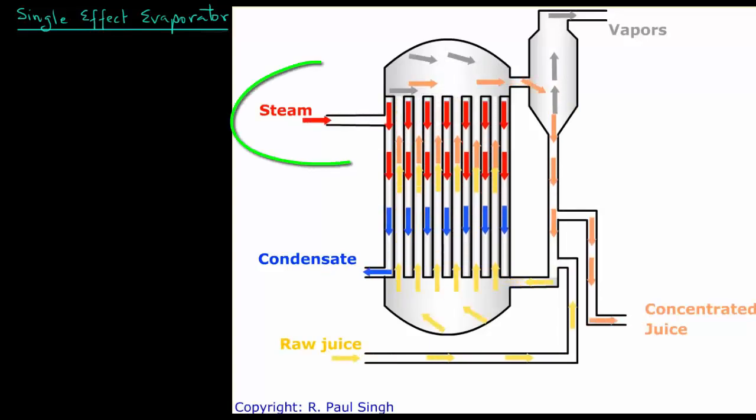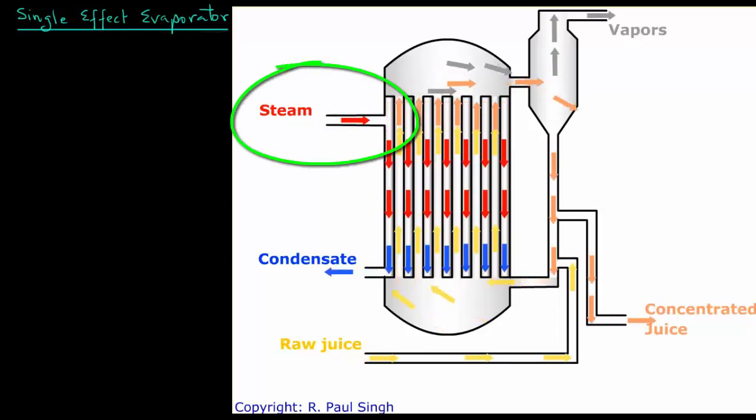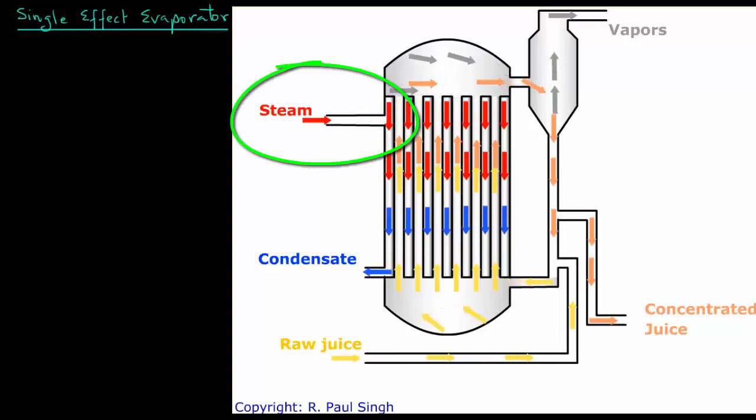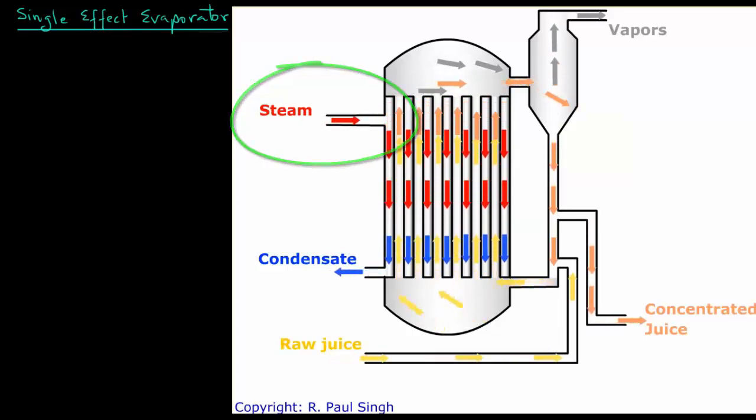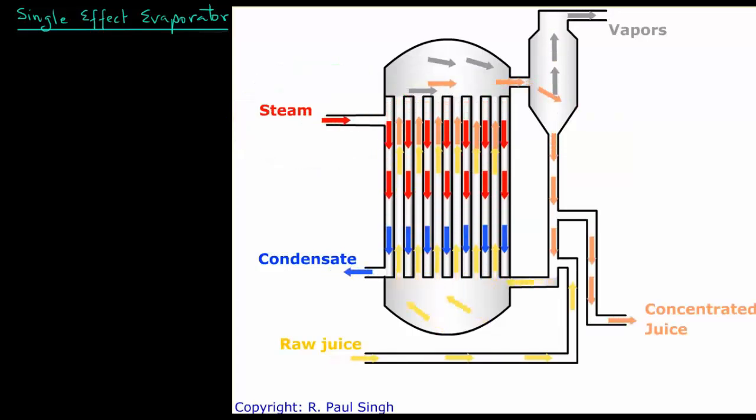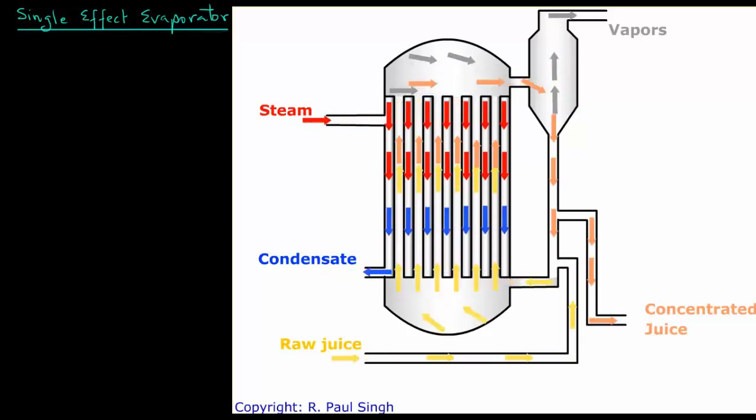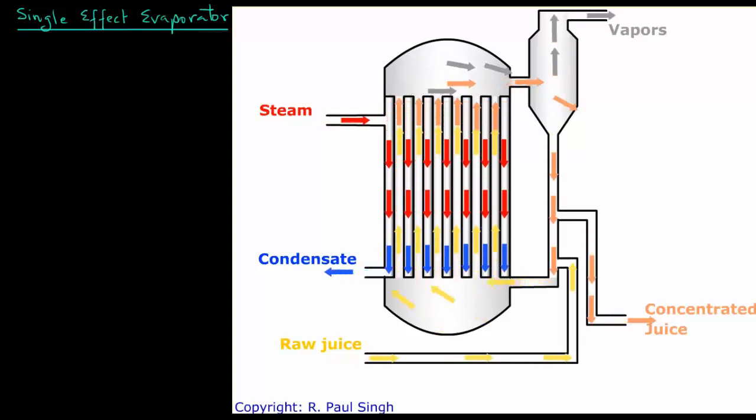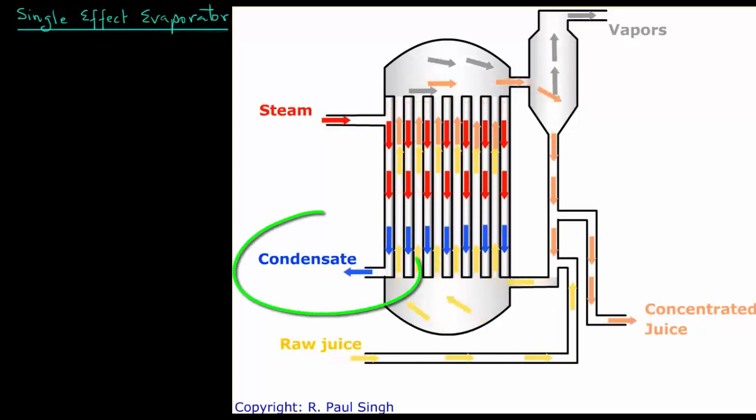Steam, on the other hand, is fed from the side and as it goes down through the tubes, making an indirect contact with the liquid feed and giving up its heat, steam then condenses and leaves as condensate.